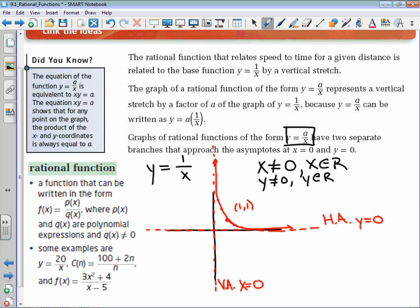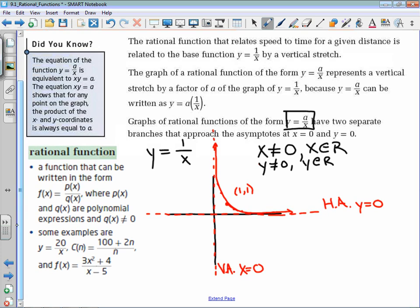Now, to get the rest of this graph, what this graph has is something called odd symmetry. And that's not so important this year. But again, if we wanted to, we could plug in some values. And we can't put 0 in for x, but we can put anything else.